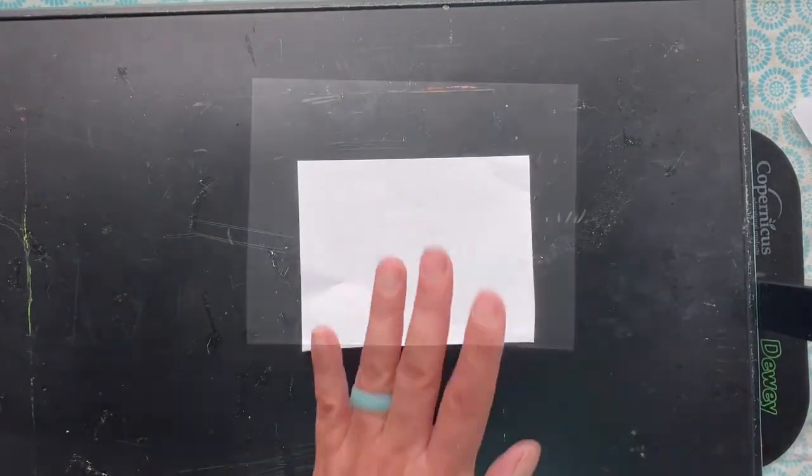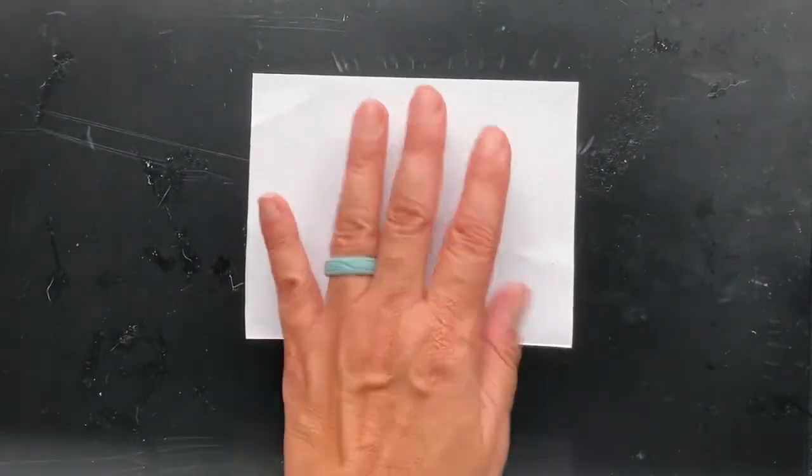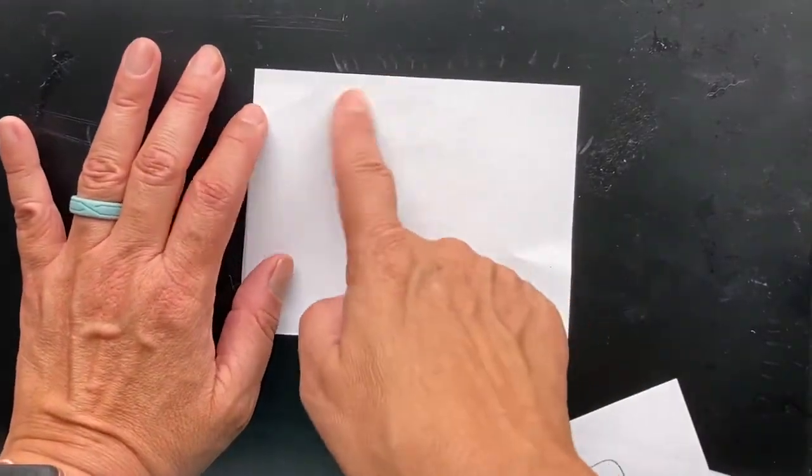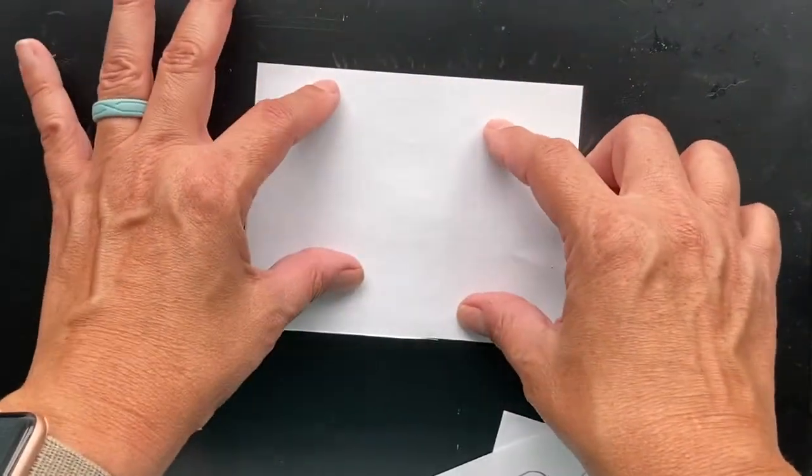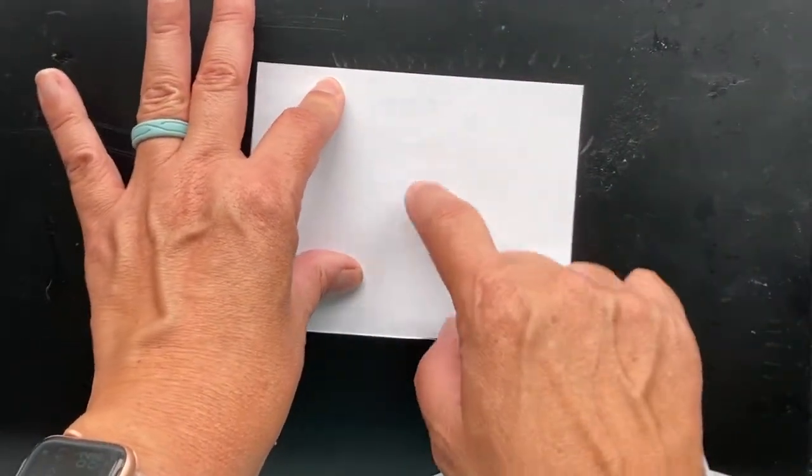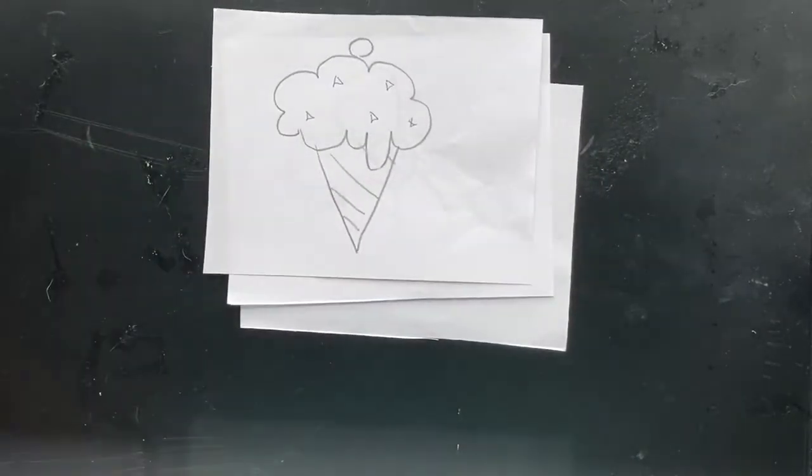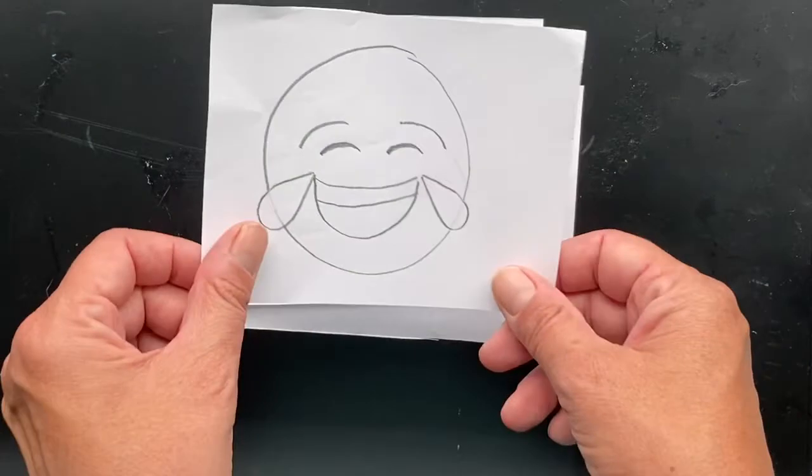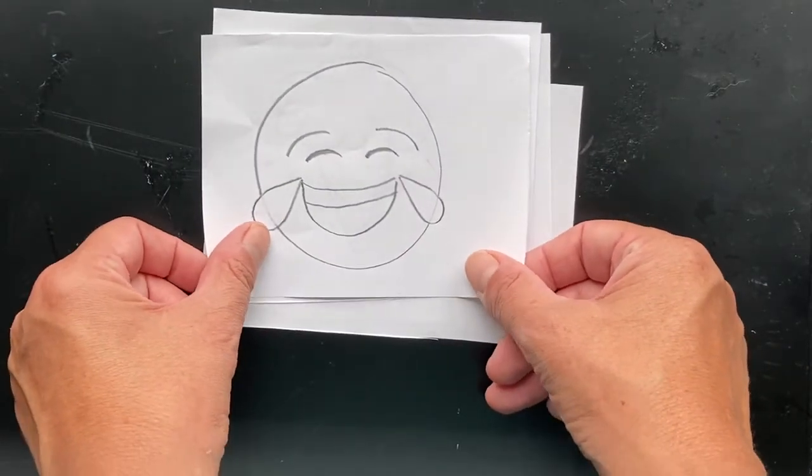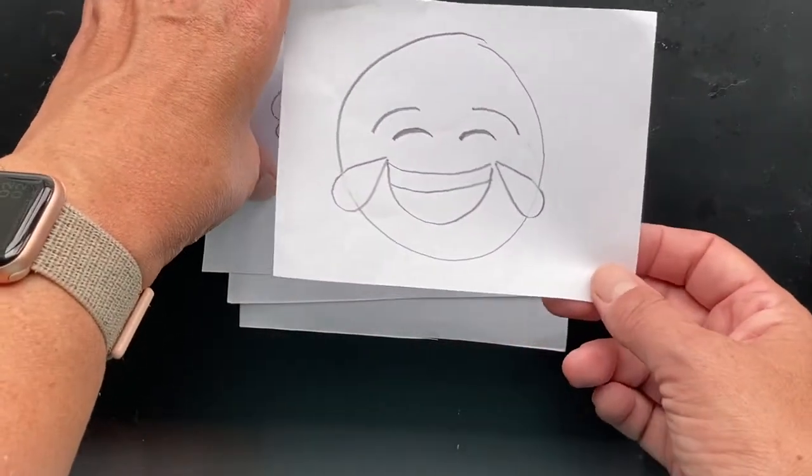So what you're going to do on this piece of paper is decide what object you would like drawn really pretty large in the middle of your rectangle. Now I've done a few, but you're only going to choose one. I just wanted to show you some examples. You could do a flower, an ice cream cone, but I'm going to do the laughing crying emoji because he's kind of my favorite emoji. But you can do anything you want.